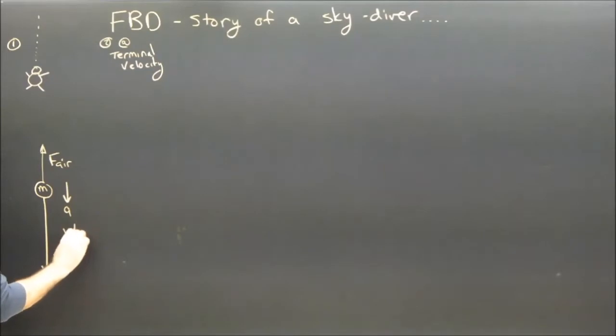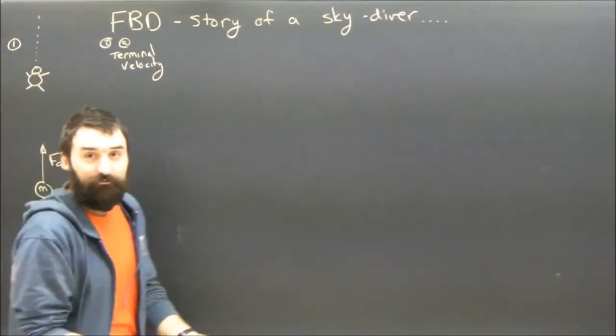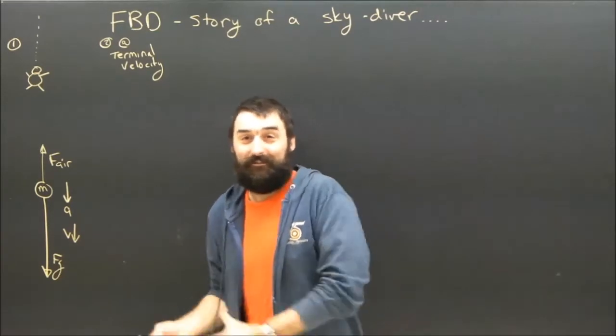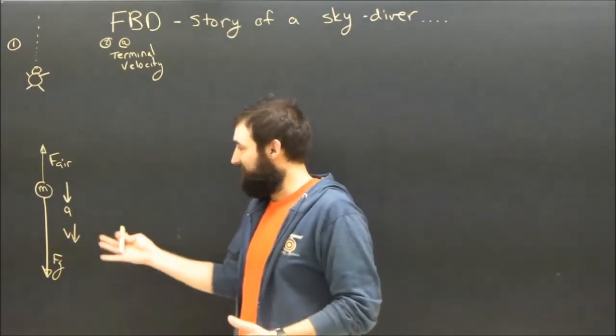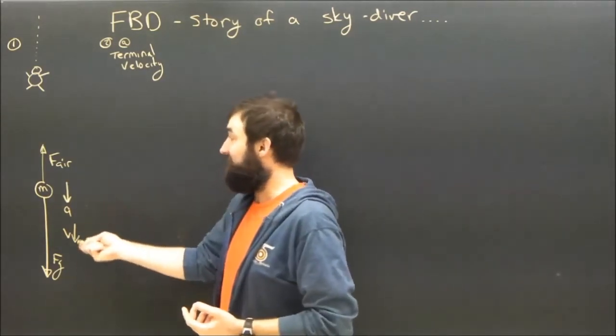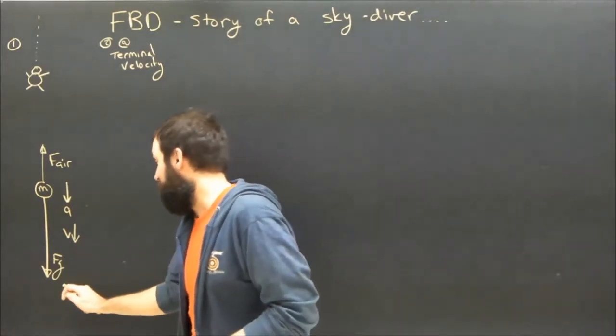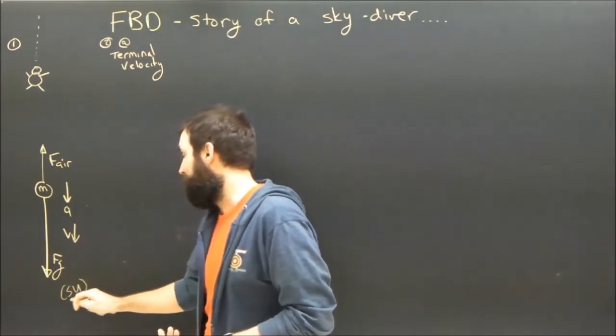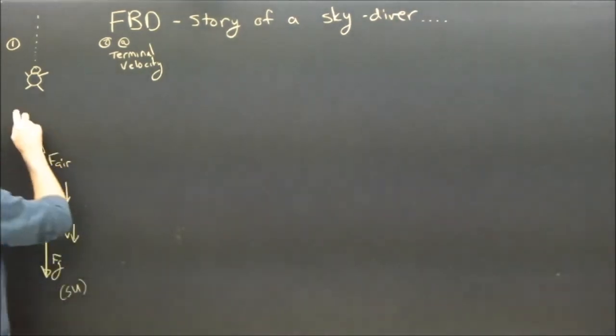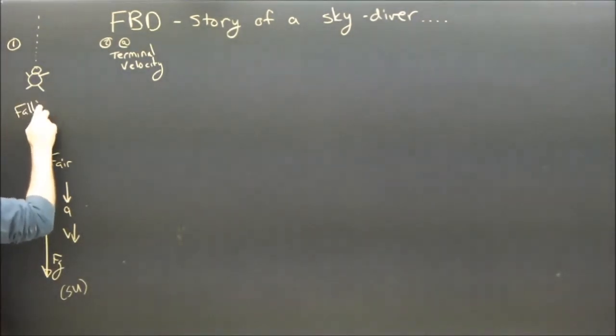He's also going down. So I don't usually indicate the direction of motion on a free body diagram. Because free body diagrams help us to figure out F net and which way something is accelerating. They don't always tell us the way things are going. But I think in this case it will be instructive to understand which way he's moving. He's moving down, he's accelerating down. And of course, therefore, he is speeding up. So that's a piece of cake, I guess. He's falling and speeding up.